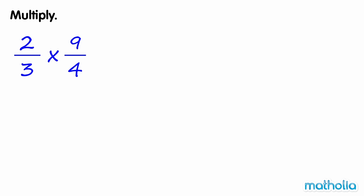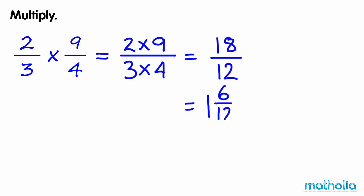Multiply. 2 thirds times 9 quarters equals 2 times 9 over 3 times 4, which equals 18 twelfths. 18 twelfths is an improper fraction, which we can express as the mixed number 1 and 6 twelfths. 6 twelfths can be simplified to 1 half. So 2 thirds times 9 quarters is equal to 1 and 1 half.